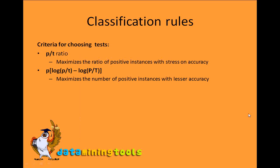Now we move to classification rules. We already covered the covering algorithm — the PRISM algorithm — in a previous session. In the covering algorithm we use the p/t ratio as a criterion for choosing a test, where p is the number of positive instances and t is the number of total instances, and we try to maximize this ratio.